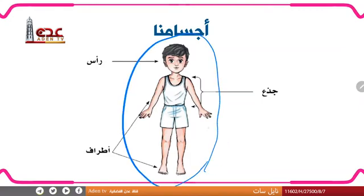الجسم يتكون من رأس. يتكون من رأس. وسيأتي الثاني: جذع. وسيأتي الثالث: أطراف.